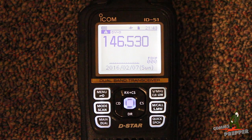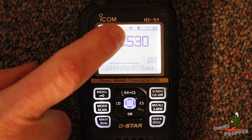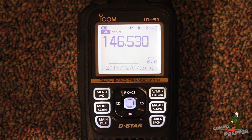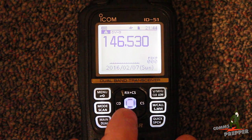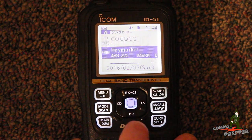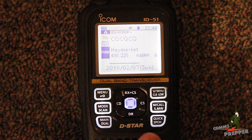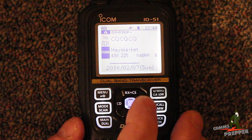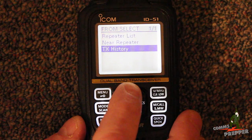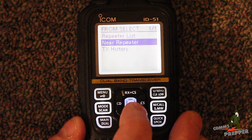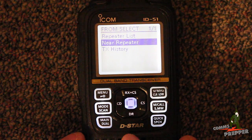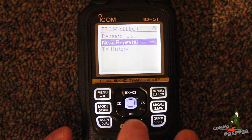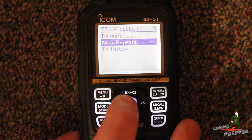All right, I've got the radio in VFO mode. As you can see here, there's a solid satellite icon showing that I have a lock, a GPS lock. So what I'll do here is I'm going to go into DR mode, D-STAR repeater mode and go ahead and select my local repeater. I'm going to do near repeater. So the radio is going to look at the repeater list, the global D-STAR list, compare it to my GPS position and find the repeaters closest to me.